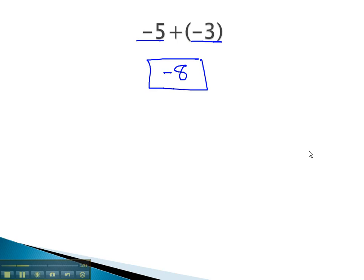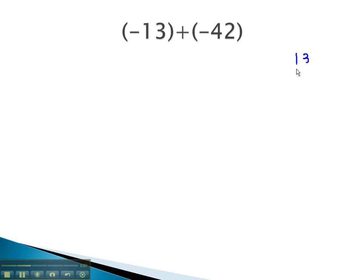Same process when the numbers get a bit larger. Negative thirteen plus negative forty-two, we can add the numbers. Thirteen plus forty-two because they have the same sign gives us fifty-five and because they're both negatives we now have negative fifty-five.